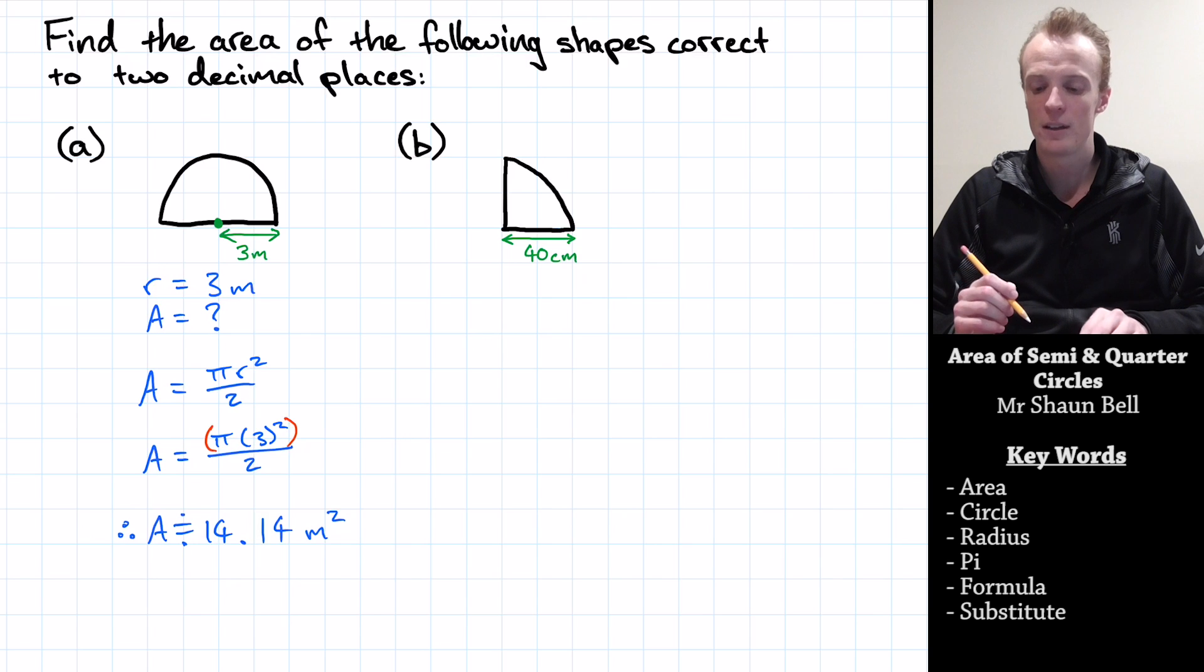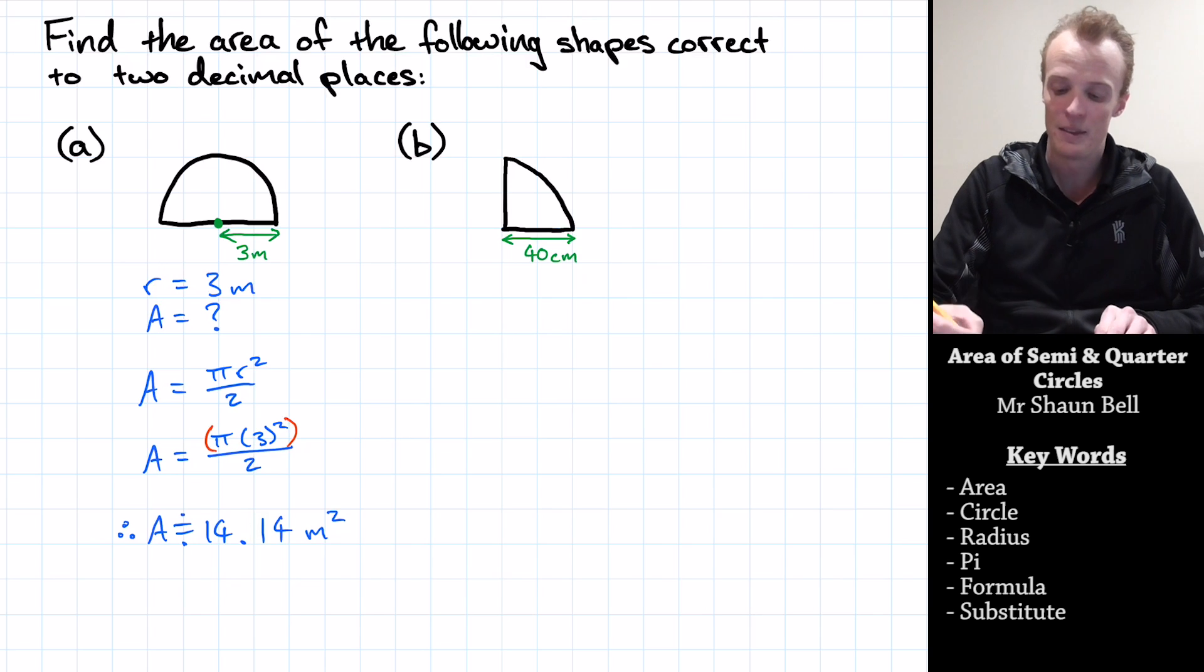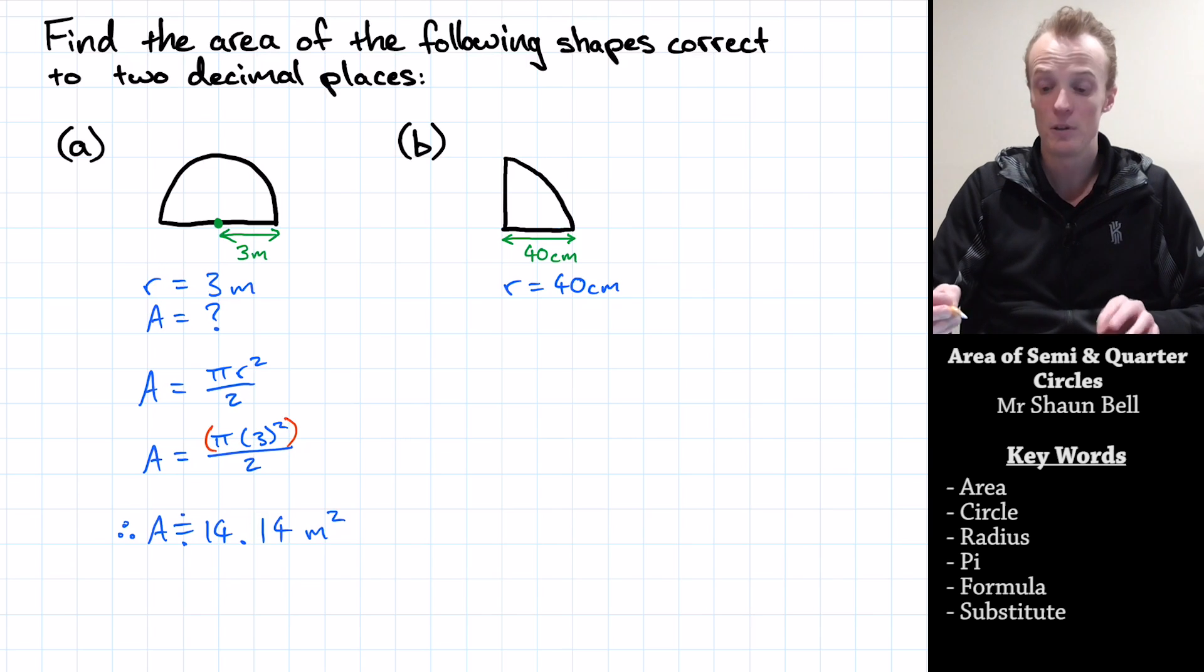But let's take a look at how we find the area of a quarter of a circle. Now, we always start with these sorts of problems by identifying the information I've been given. In this case, I've been given the radius and it's equal to 40 centimetres.